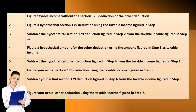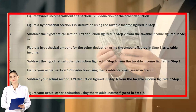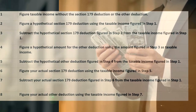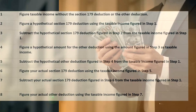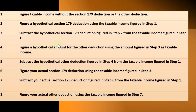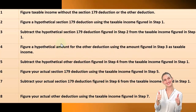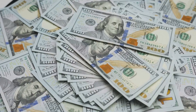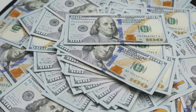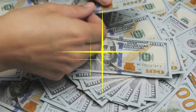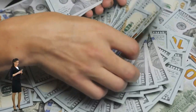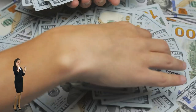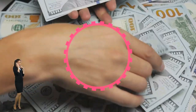To handle multiple income-limited deductions, complete the following steps. Step one: figure taxable income without the Section 179 deduction or the other deduction. Step two: figure a hypothetical Section 179 deduction using the taxable income from step one. Step three: subtract the hypothetical Section 179 deduction from step two from the taxable income in step one. Step four: figure a hypothetical amount for the other deduction using the amount from step three as taxable income. This is a complex series of steps — conceptually understandable, but the calculations can be quite tedious. Software can hopefully help run through those calculations, and then we can unpack and deconstruct them by applying these concepts.